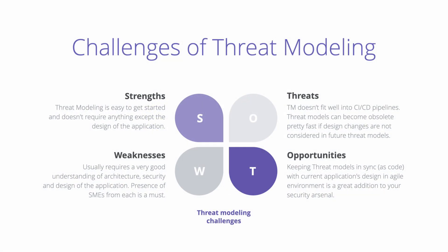Through the lens of SWOT analysis, as a strength, threat modeling is very easy to get started — all that is needed to threat model is a design of the application. As a weakness, threat modeling requires a very good understanding of the application's architecture, which means if we do not have sufficient depth in the design of a software, we might miss critical areas of the software itself, so the presence of subject matter experts is required for threat modeling.